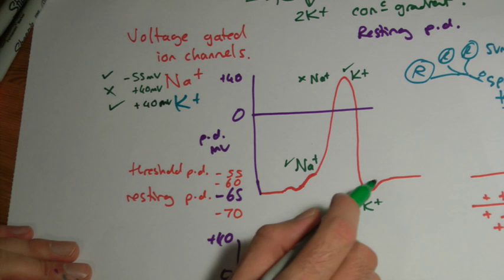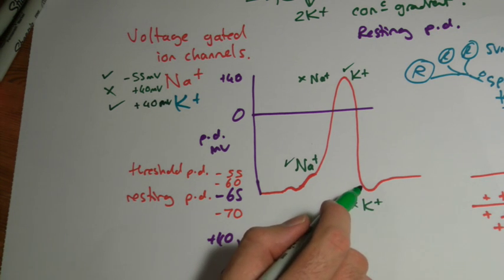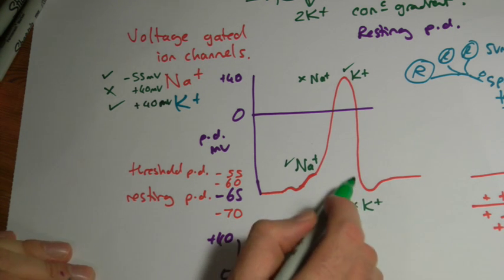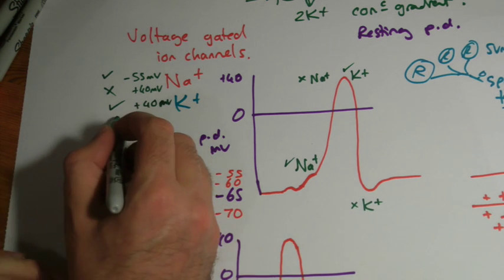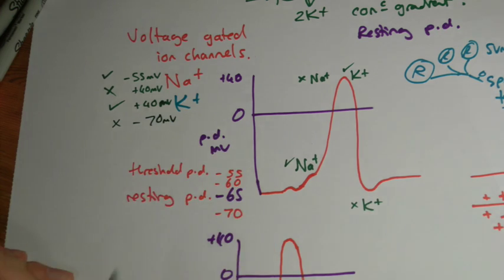It gets a bit awkward when it gets down here. Are they actually shutting down at sort of minus seventy? Yeah, they sort of are. I think you just stick with they close. Ideally, they close at minus sixty-five and wouldn't even get this hyperpolarization, but they don't. It's just how it works.